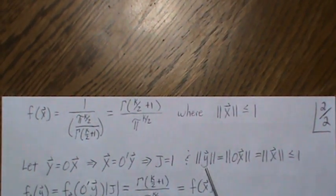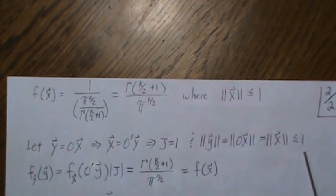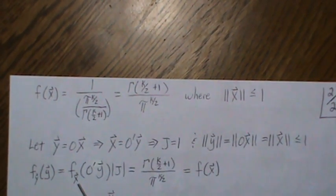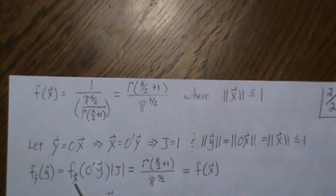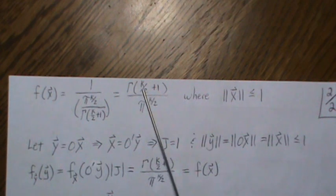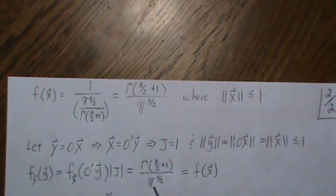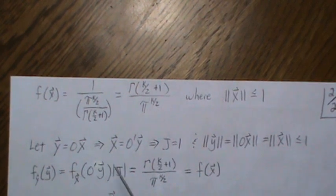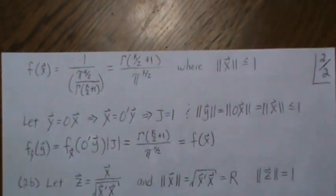So all these rotated vectors have to be less than or equal to 1. To find the density of y, we plug in our substitution in the density of x times Jacobian, which is 1. And since there's no x's, we get the same thing. But that's the density of x, so this is a rotationally invariant function.